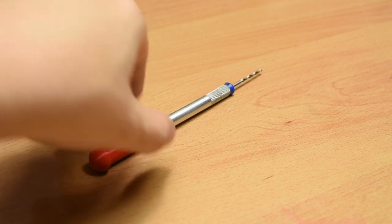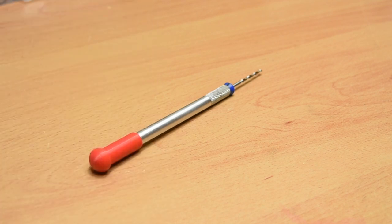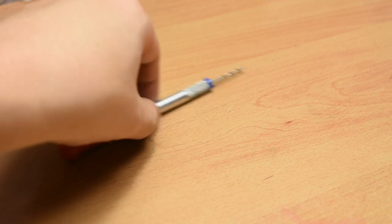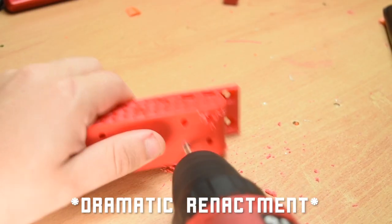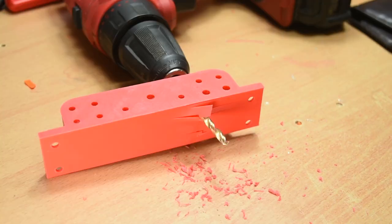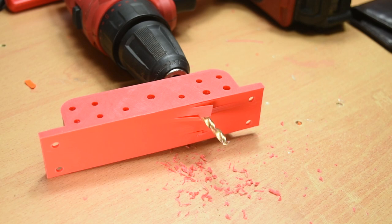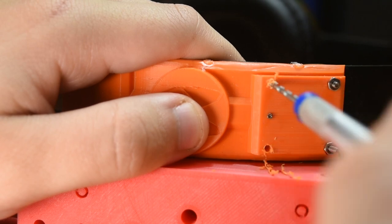I use this a surprising amount actually. Anywhere a print needs a hole drilled to size, I'll use this rather than a powered drill. This is because a few times, if I'm not really careful, the drill bit has gripped too much and drilled out the other side of the part that are not meant to have holes all the way through them. A hand drill is probably not going to do this.